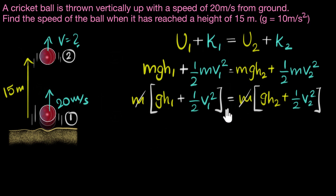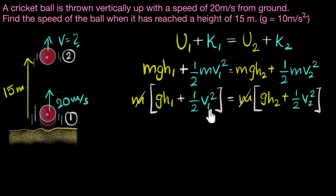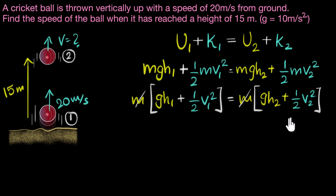Now let's check what we know. G is given as 10 m/s². H₁ is the height at point one — we know it's zero because the ball is thrown from the ground. V₁ is 20 meters per second. H₂ is 15 meters. The only unknown is V₂, which we need to calculate. So let's plug in and solve.